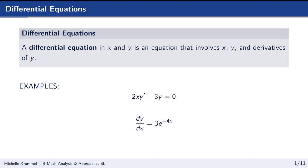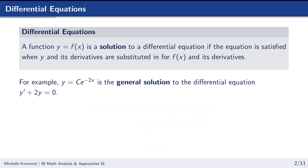The first example we have here is 2xy' minus 3y equals 0, where y' is the derivative of y. In the second example we have dy/dx equals 3e to the negative 4x, so we also have a derivative in our equation — the dy/dx. We're using Leibniz notation. Both are examples of differential equations and you're free to use either notation; you can write y prime in place of dy/dx.